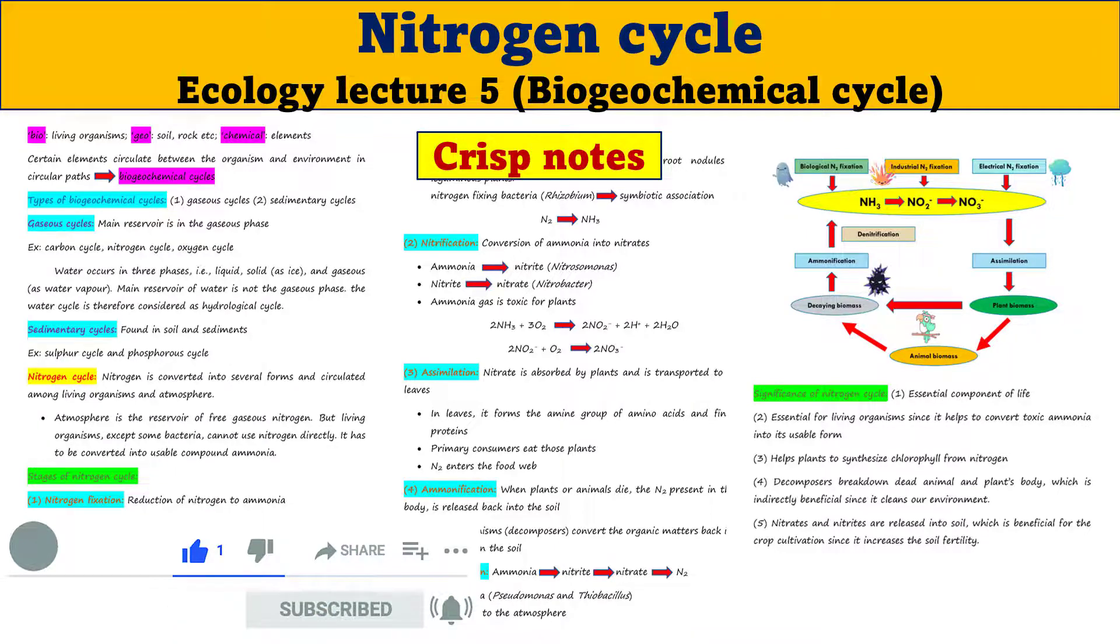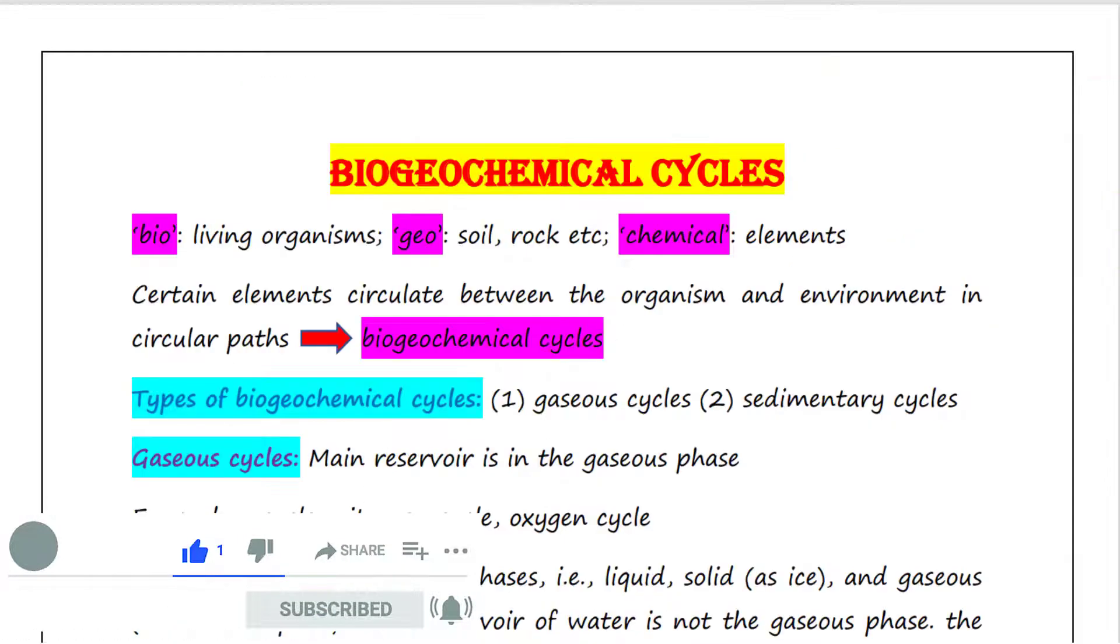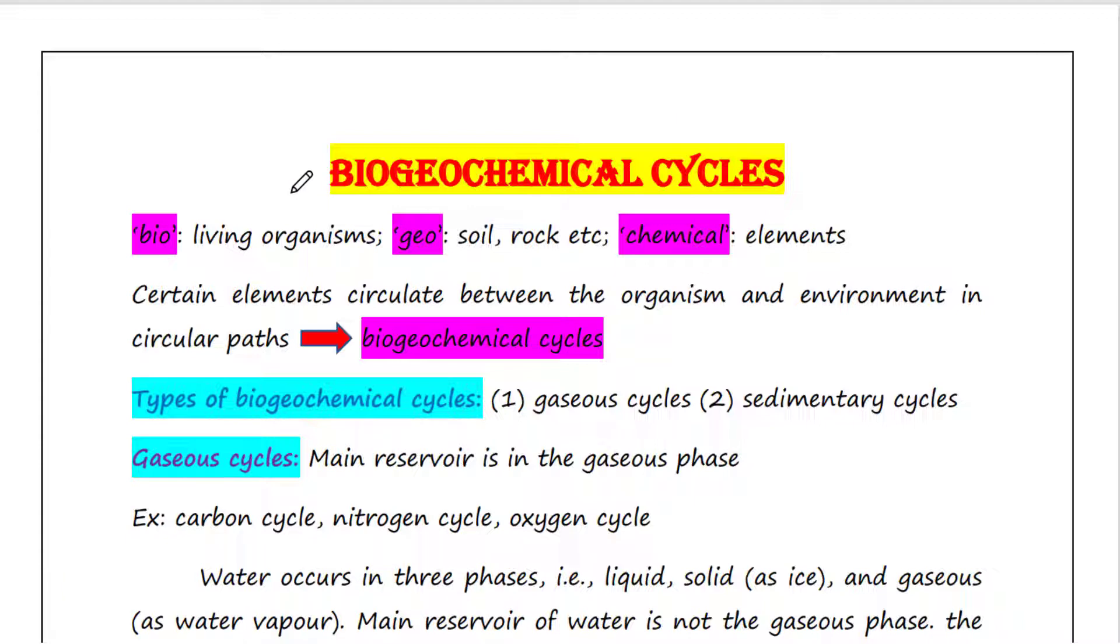In the last lecture we talked about biogeochemical cycles. We've seen that there are two types: gaseous cycles and sedimentary cycles. We already talked about carbon cycle and water cycle. If you want to check those videos, links are provided in the description box.